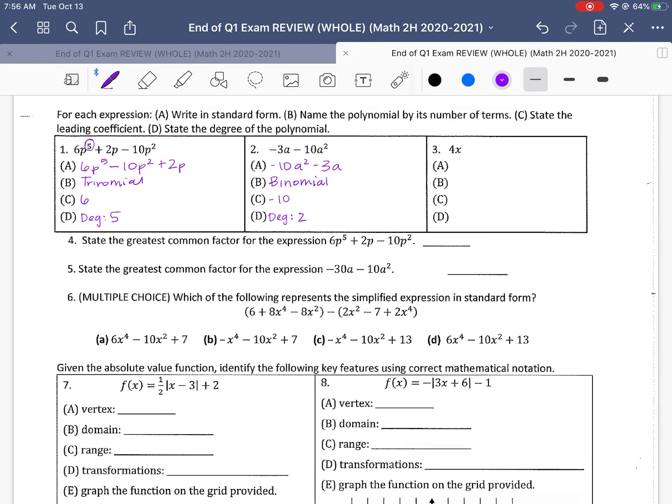On number 3, again, this one only has one term, so it's already in standard form. Because it's one term, we call it a monomial. Its leading coefficient is the number out front, so it's a 4. Remember, the x is the variable, not the coefficient. And then lastly, the degree. Remember, if there's no number written there, but there's still one variable, your degree is equal to 1.